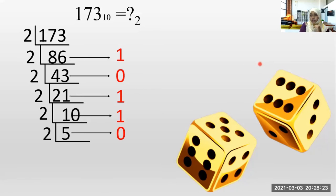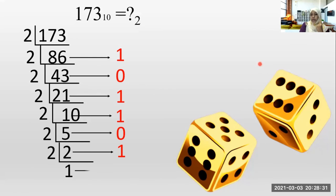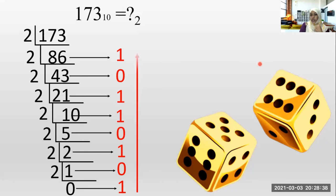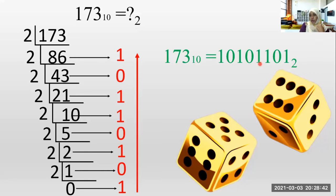How many twos in five? Two times, one remaining. How many twos in two? One time, zero remaining. How many twos in one? Zero, one is remaining. So the answer is 1, 0, 1, 0, 1, 1, 0, 1 base two.